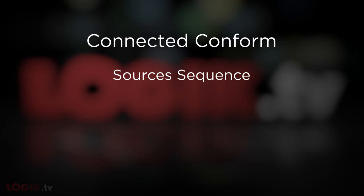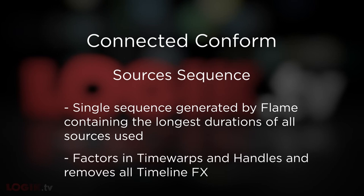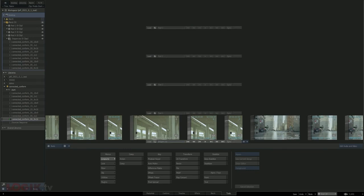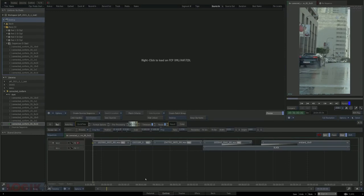The sources sequence is another core feature of the connected conform that analyzes all of the shots within the sequences in the sequences reel and creates a single sequence that intelligently contains the longest durations of all of the sources that you're using. It factors in time warps and handles to give you your shots at the correct duration, and it removes all of the other timeline effects. To create it, you first ensure that your sequences are in a sequences reel on your desktop, then go to the conform tab and click create sources sequence.